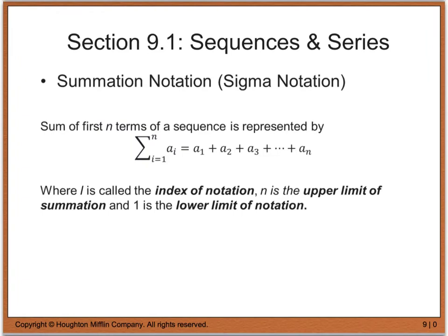Before we look at the series, though, we need to go over summation notation or sigma notation. Now, sigma notation looks kind of like this. This E-looking symbol is actually called a sigma. And essentially what it means is we are going to add up all of the terms. So it says the sum of the first n terms of a sequence is represented by.